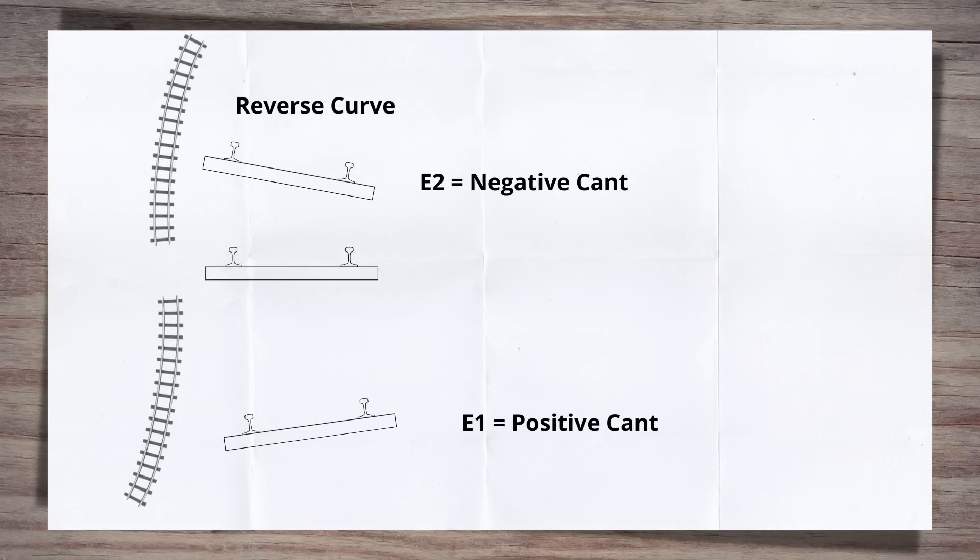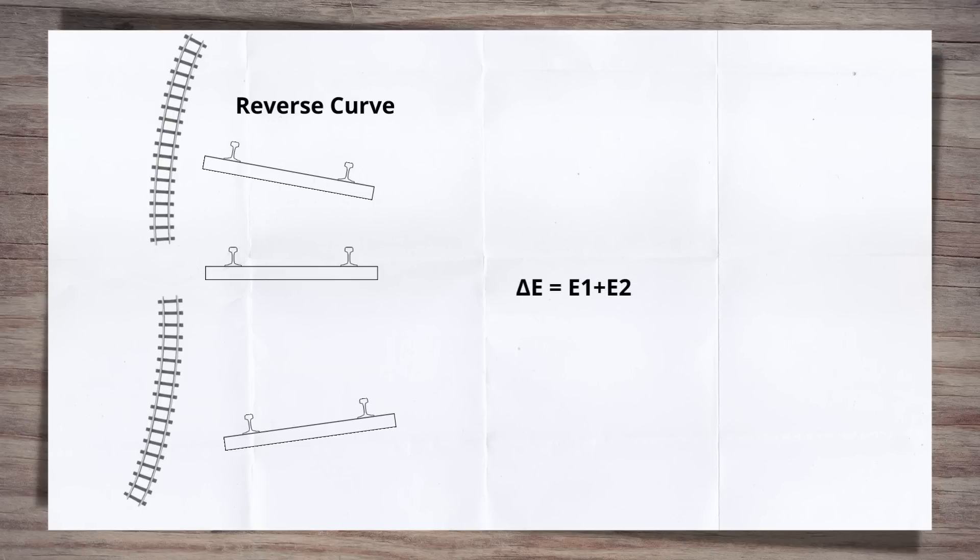Mathematically, if we say our first curve has positive cant, and the second has negative cant, e1 minus minus e2 equals e1 plus e2. So if we put this into our equation, we get the length equals the two cant values added together multiplied by the line speed divided by 3.6 multiplied by the rate of change of cant. Again, this works the same for the cant deficiency values. Other than those tweaks to the equation, the process is the same.